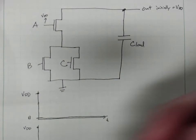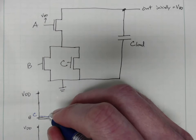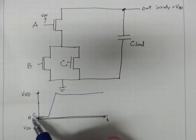We have a transition on C. C is gonna start low and it's gonna go high. So C is low, it goes high.